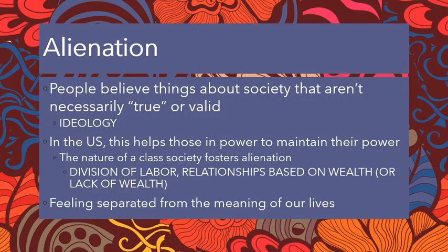He came up with these ideas of alienation, false consciousness, and class consciousness to help people understand that they might not have an accurate understanding of where they fit relative to the capitalist class — the people who own the means of production. Marx referred to these people as the bourgeoisie, and he was speaking to the workers of society about the ideology of capitalism.